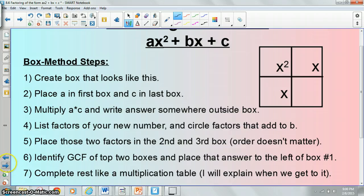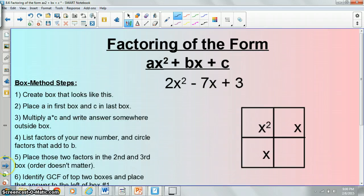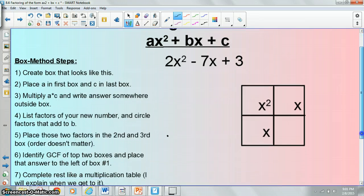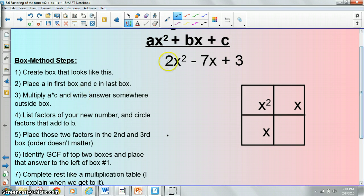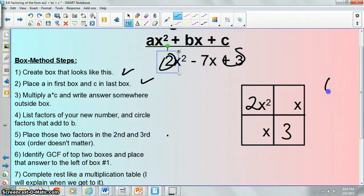So let's give this a shot. Step one is done. We've created a box. Step two, place A in the first box. That A would be the number 2. Place C in the last box. That C would be the number 3. Multiply A times C. A term was 2 and the C term was 3, so that gives us 6.